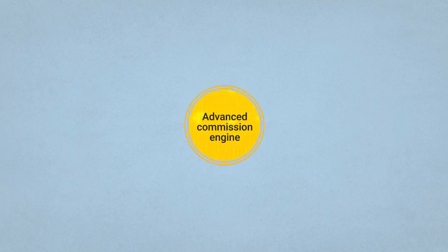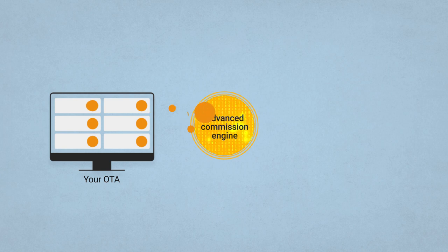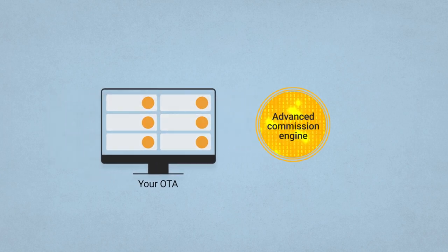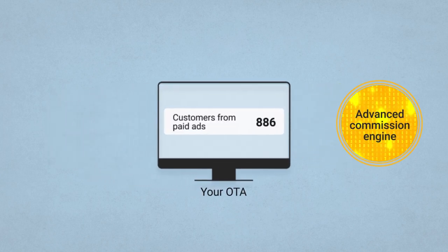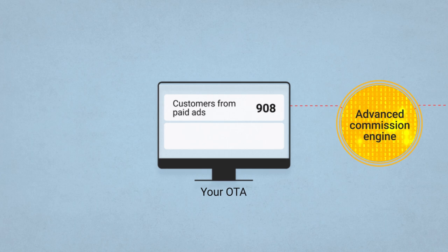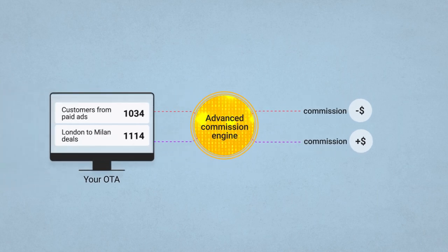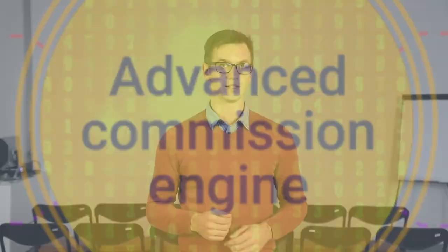Yes. Let's step into the territory of advanced commission engines. These ones use business intelligence to analyze how successful your current rates are. For instance, you see that the number of customers coming from paid adverts is falling – maybe reduce your commission by a dollar or two. Or you see that your deals from London to Milan are booming – let's increase the price. You can also automate some changes to the rules, like having your engine react to demand by increasing or decreasing commissions.